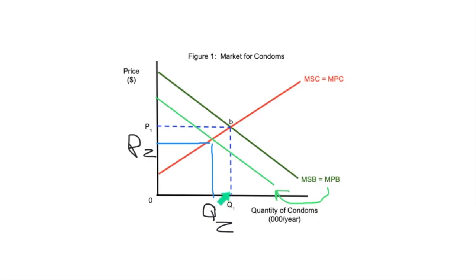The socially optimal point is point B — that's where there's an efficient allocation of resources. The use of a condom is a good thing, but not all people who have sex are using one. So condoms are under-consumed, meaning the government would be interested in increasing consumption of condoms. We can show this by extending that line up, revealing the potential welfare gain.